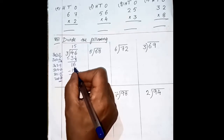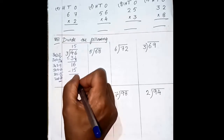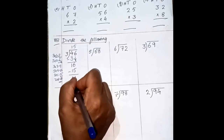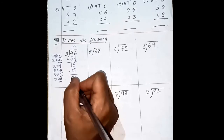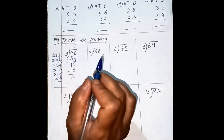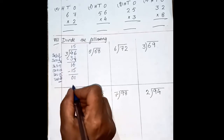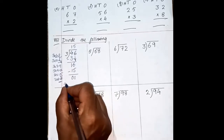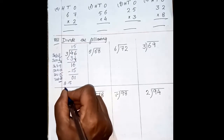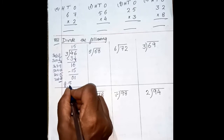Now do subtraction: 6 minus 5 is 1, 1 minus 1 is 0. So you don't have any number here, so we have to stop. This is your quotient. You can write the quotient here. Quotient is 15 and the remainder is 1.